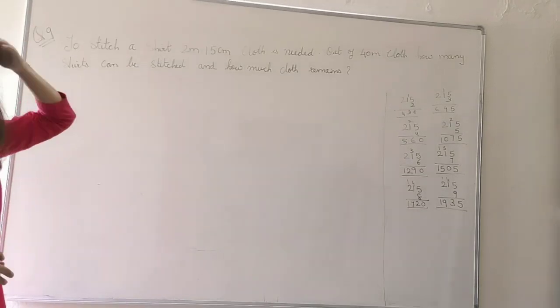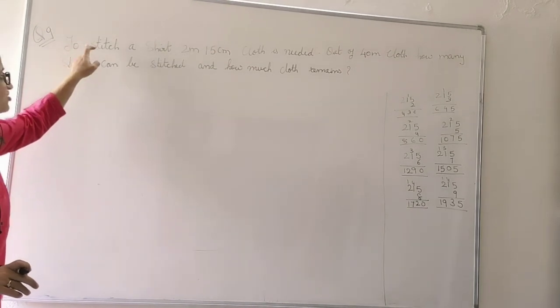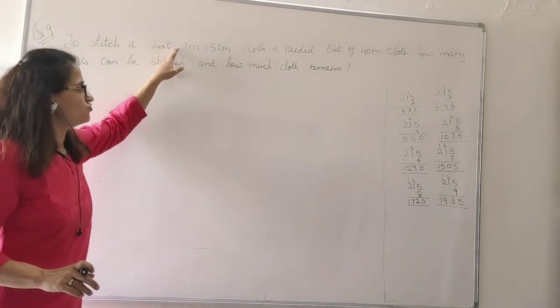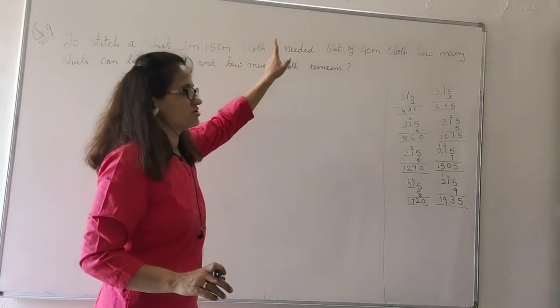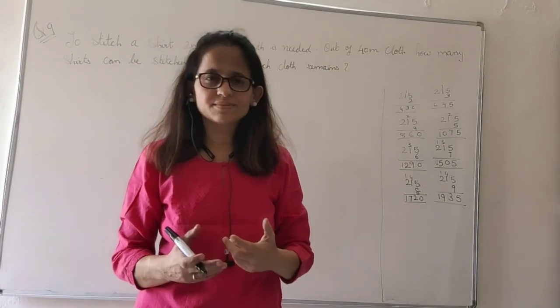Question number 9 of exercise 1.1. To stitch a shirt, 2 meters 15 centimeters cloth is needed. Now these days you buy ready-made shirts.